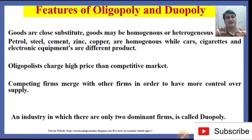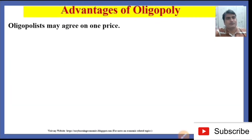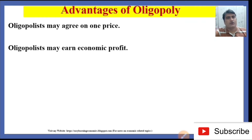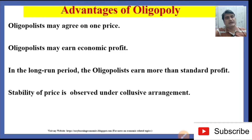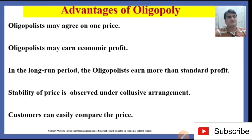The industry in which there are only two dominant firms is called Duopoly. Regarding the advantages of Oligopoly: firms may agree on one price; Oligopoly may earn economic profit; in the long-run period, the oligopoly earns more than standard profit; stability of price is observed under collusive pricing; and customers can easily compare prices.